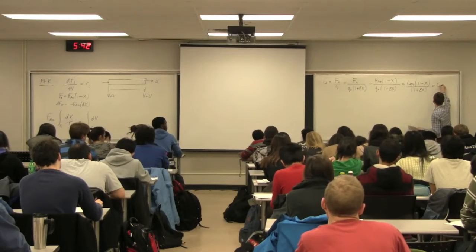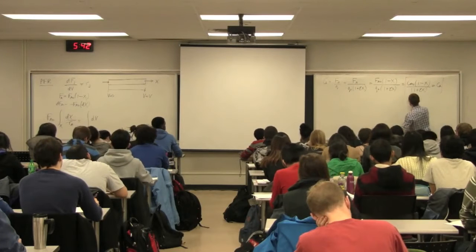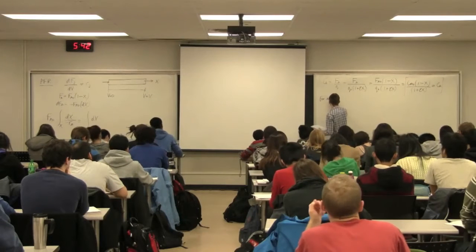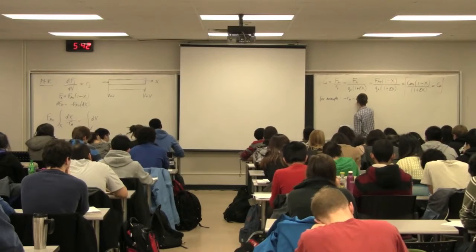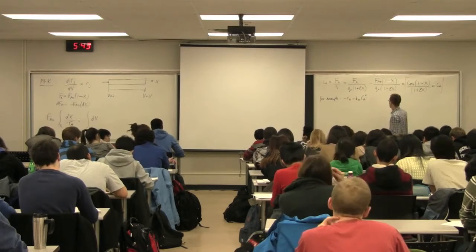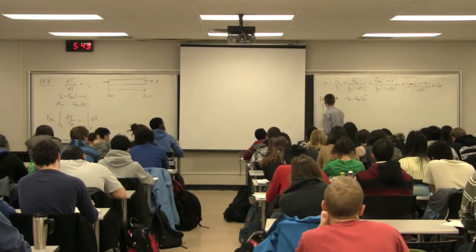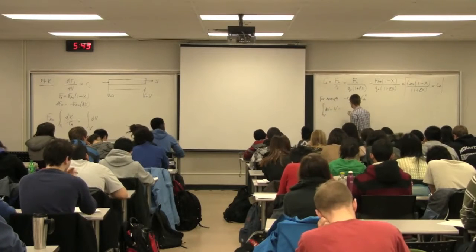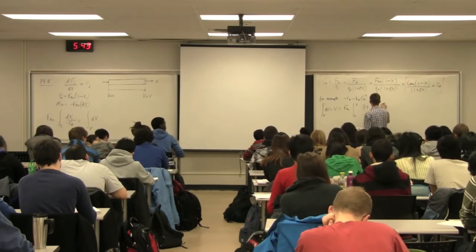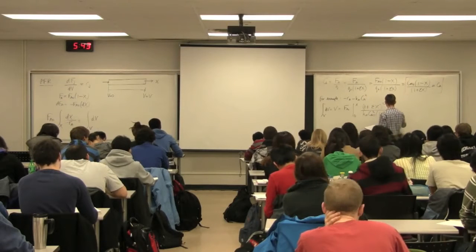We can look at a system where minus rA equals kA times CA squared — a second-order reaction in a plug flow reactor. I can substitute minus rA in terms of kCA, replacing CA with the expression in the red box, to obtain that the volume V equals FA0 times the integral from 0 to final conversion x of (1 plus epsilon x) squared over kA times CA0 squared times (1 minus x) squared dx.